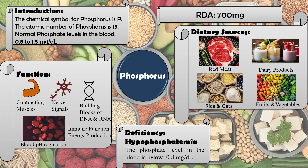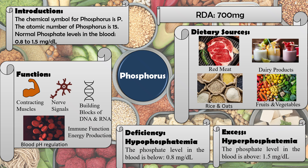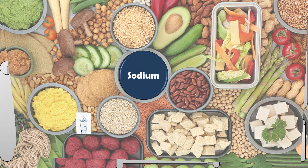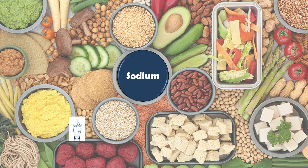If phosphate levels increase above 1.5 mg/dL, it leads to hyperphosphatemia, which is the increased level of phosphate in the blood above the normal range.